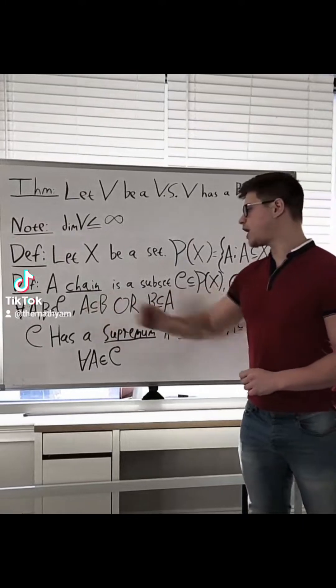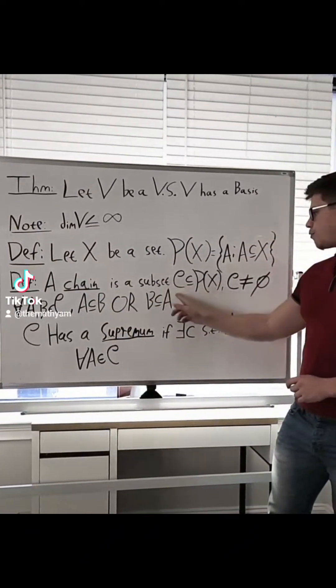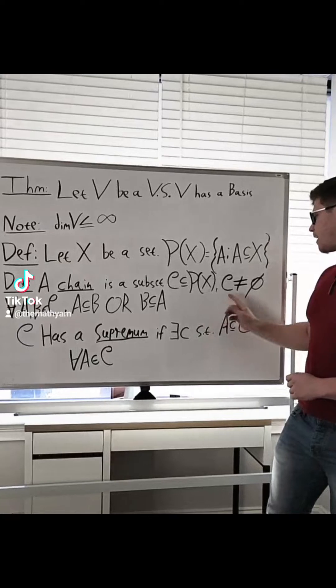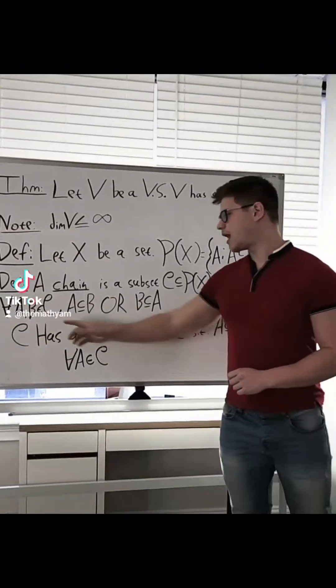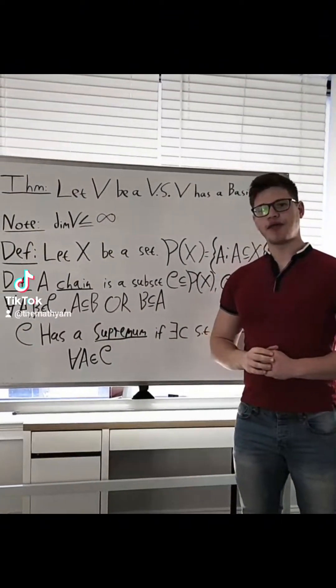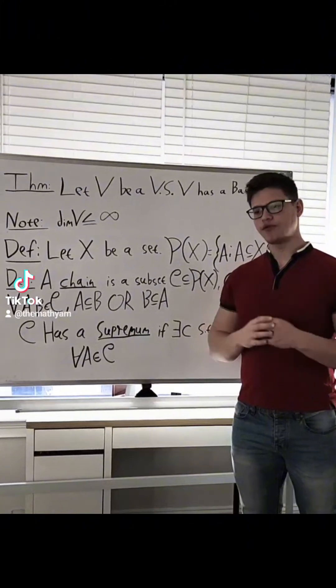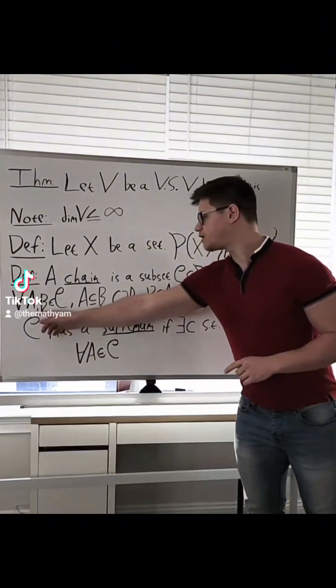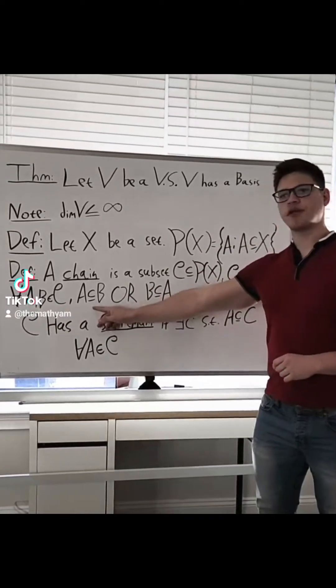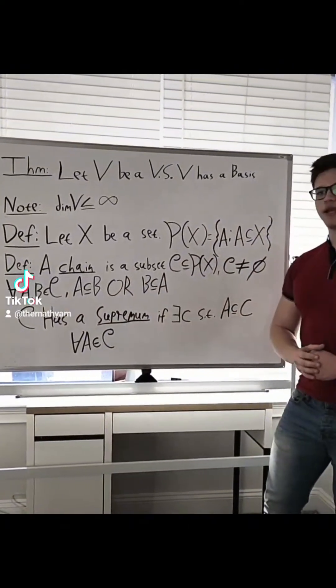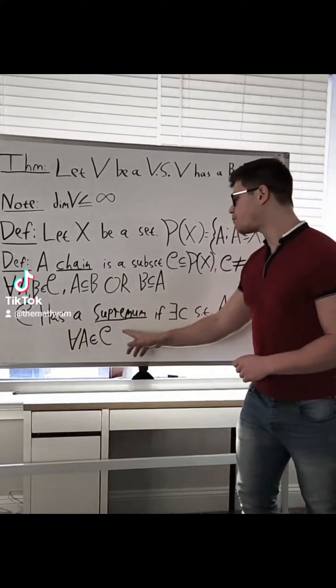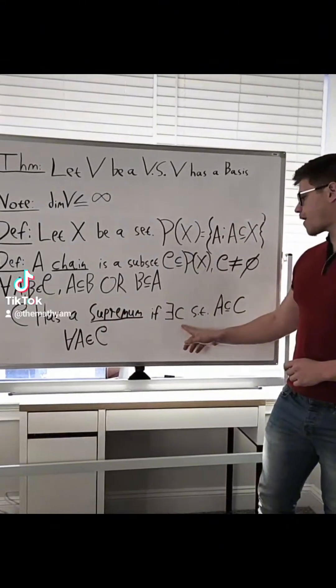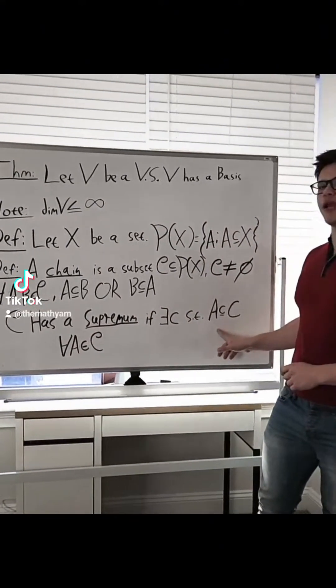We say that a chain in P(X) is some set of subsets C such that C is non-empty and the inclusion relation is totally ordered on C. In other words, if we have A and B in C, then either A is contained in B or B is contained in A. We say that C has a supremum if there exists some set that contains every set inside of C.